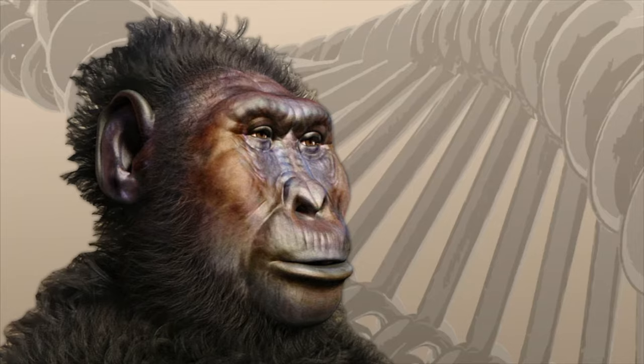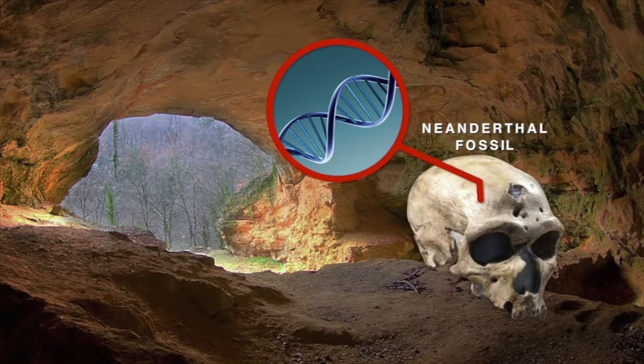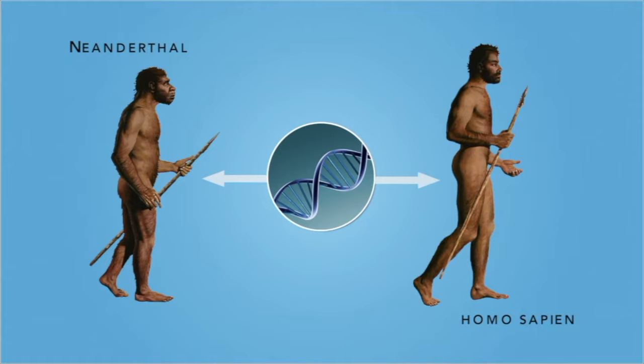In 2008, researchers found DNA in Neanderthal fossils from a cave in Croatia. Scientists compared the mitochondrial DNA of humans and Neanderthals to estimate the divergence of our modern lineages from these ancestors.